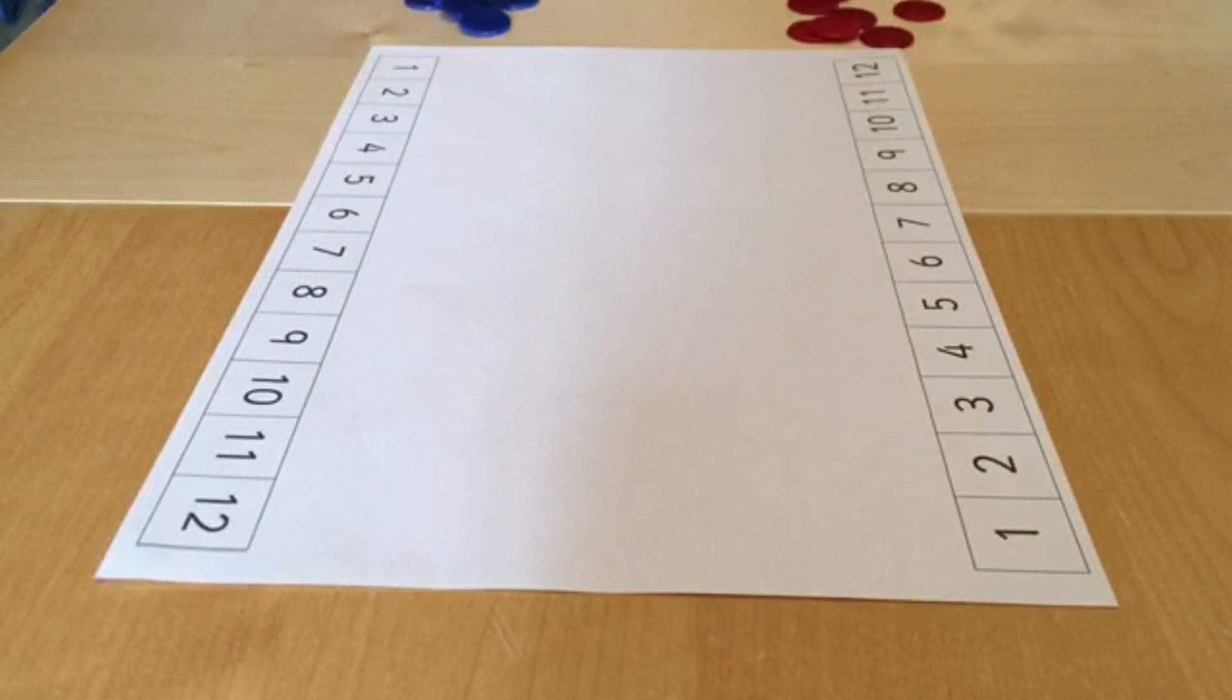A slightly harder version of the game uses a piece of paper with the numbers one to twelve on either side and two dice. Player one rolls the two dice, they now have a choice.